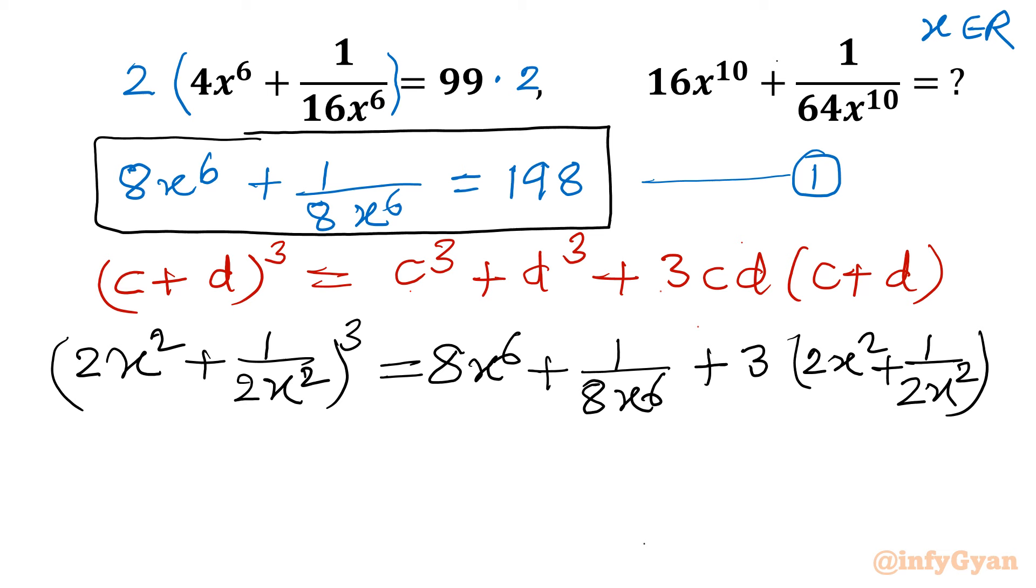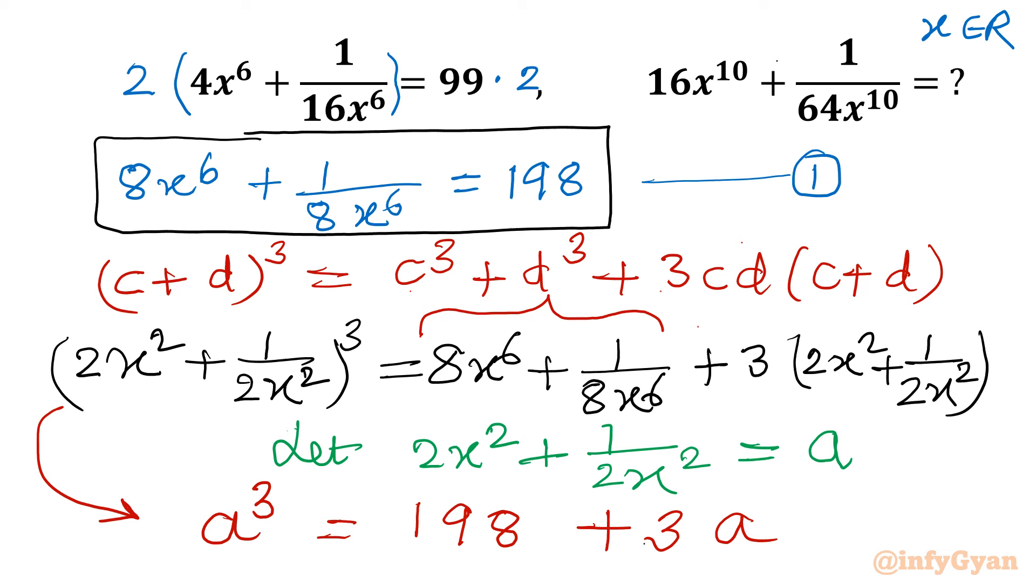I will consider: Let A equal 2x^2 plus 1 over 2x^2. So I will convert our equation in terms of A. This will become A^3 equals 198 plus 3A. So this is one cubic equation where we are going to find out the A value. A is 2x^2 plus 1 over 2x^2. Let's solve this cubic first.